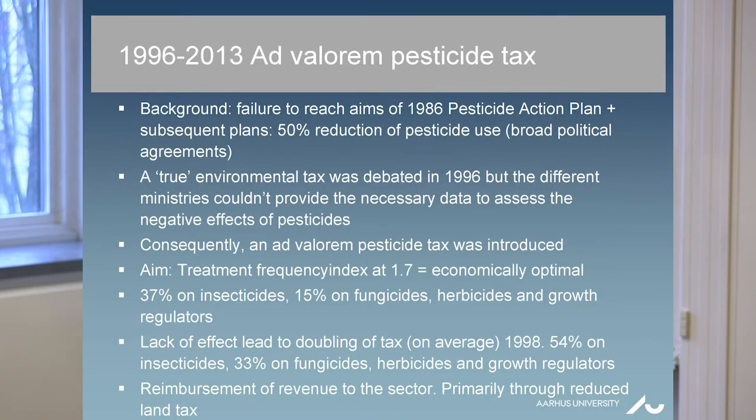So the tax levels were 37% on top of the price of insecticides, and then 15% on top of the price of fungicides and herbicides and growth regulators. But very soon after, they could see that there was a lack of effect of the tax, and therefore already in 1998, the tax was doubled on average and reached a level of 54% on insecticides and 33% on herbicides and growth regulators.